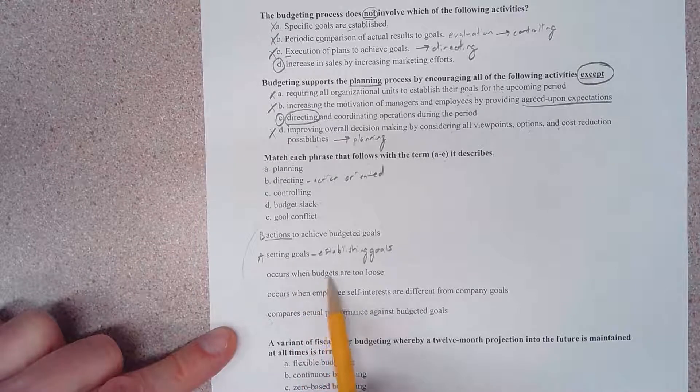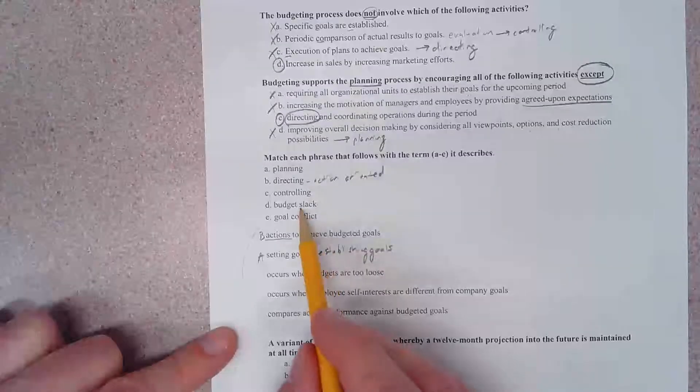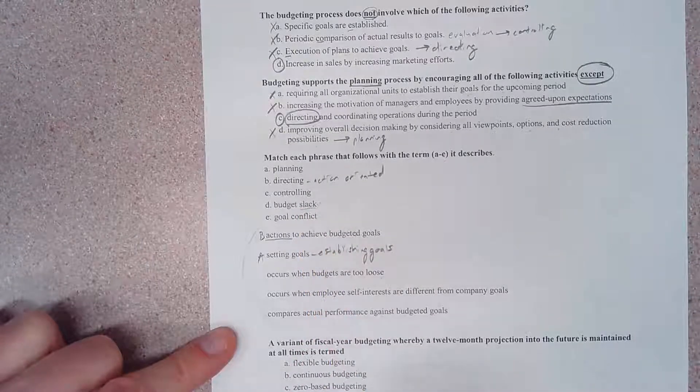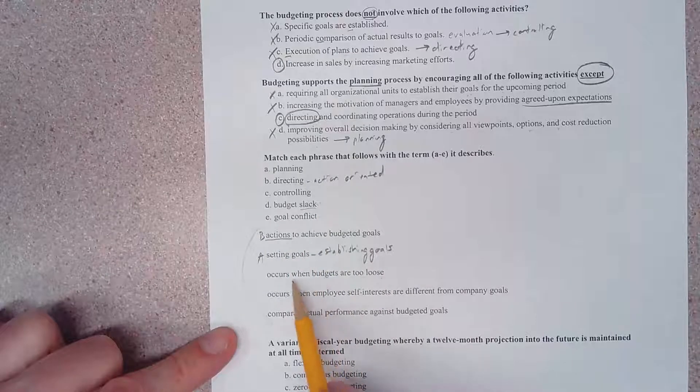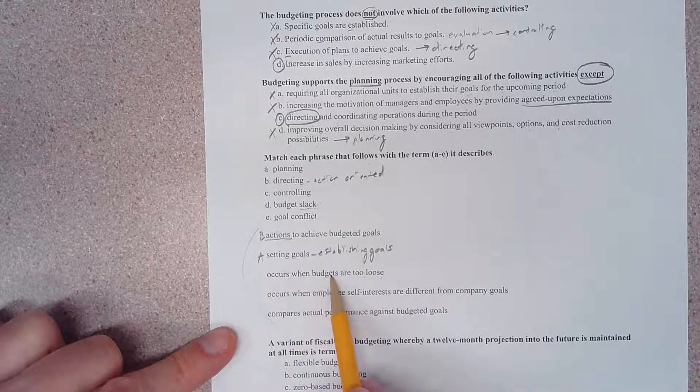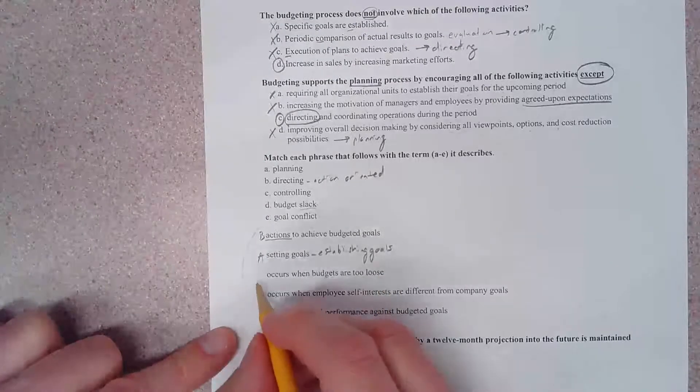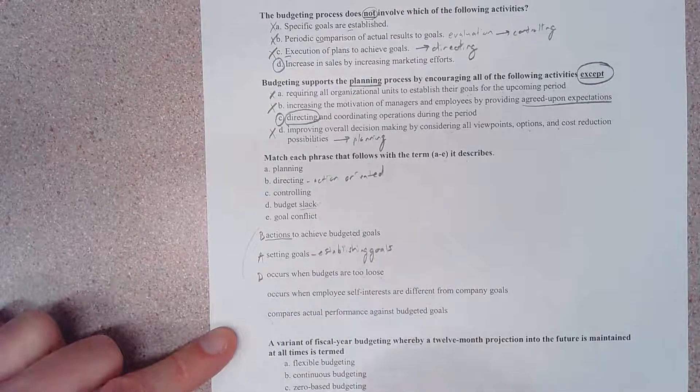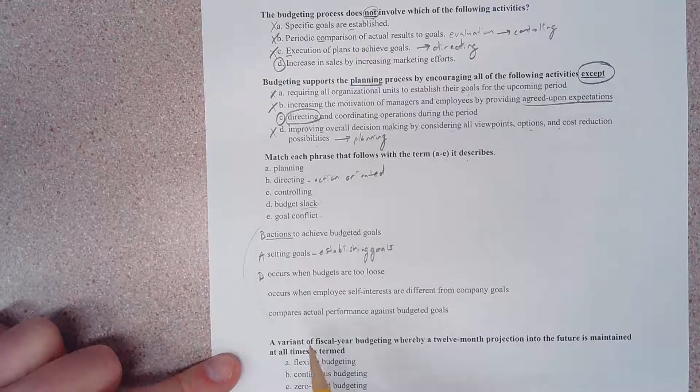Occurs when budgets are too loose. Well, just like a belt, the word slack. When we have budgetary slack, we can say that our budgets have been set up to be too loose or too easy to meet. So that is going to be choice D. Looks like we have spelled the word bad, and that's not good. No pun intended.